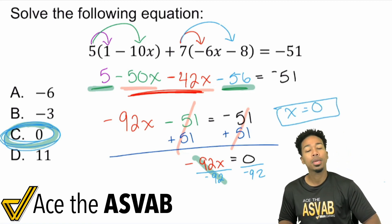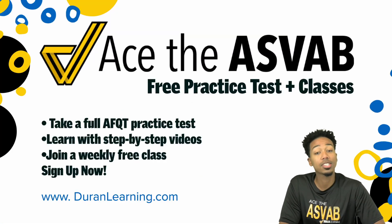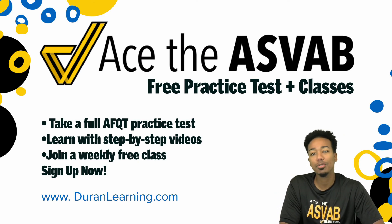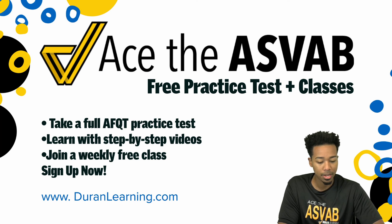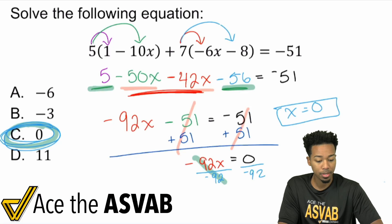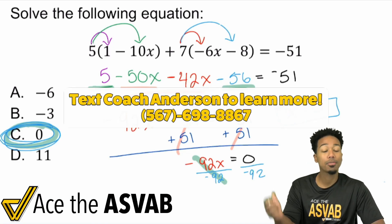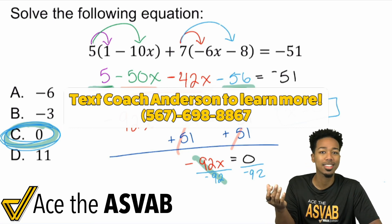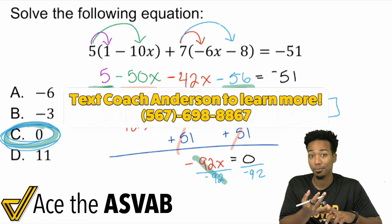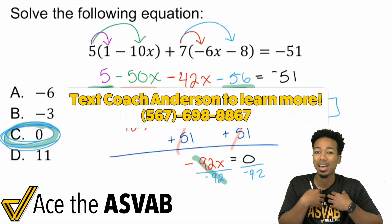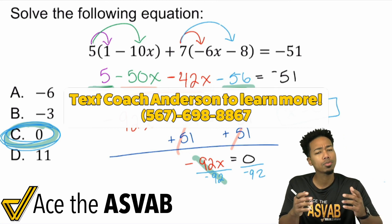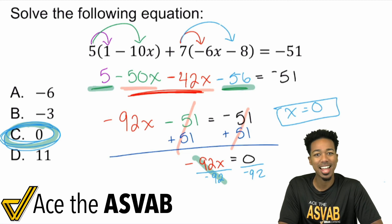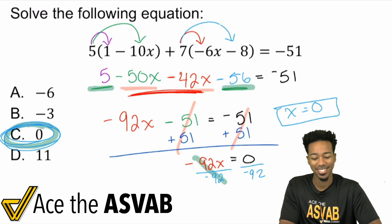Booyah — X equals zero, and there's our answer! Don't forget, at the end of the day I want you to succeed. We have a free practice test with free registration to my free ASVAB classes once a week. Reach out to me if you have questions about my program — my number is 567-698-8867. I'm Coach Anderson. I have a full program with all my class recordings, practice problems, video solutions, and my support every step of the way. Let's ace the ASVAB and get the jobs we want. I'll see you soon!